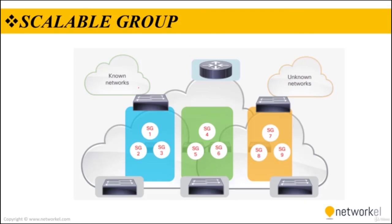A scalable group is a logical object used to group similar endpoints. It is based on an SGT with the same basic purpose and rules as in traditional networks. Cisco SD Access assigns every endpoint to a scalable group. Assignment to a scalable group can be either static or via dynamic authentication. The same scalable group is configured on all fabric edge and border nodes. Groups can be defined in Cisco DNA Center and/or Cisco ISE and are advertised via Cisco TrustSec. There is a direct one-to-one relationship between host pools and scalable groups.